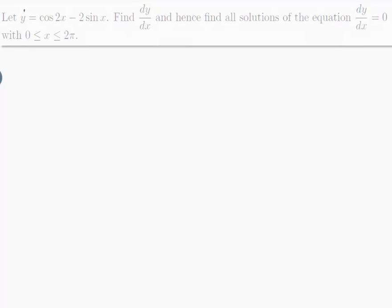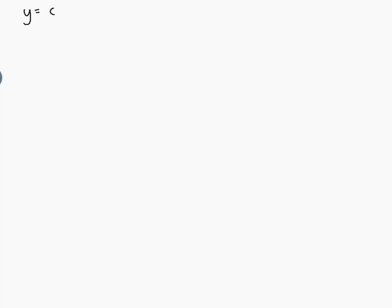So let's write it up: y is equal to cos(2x) minus 2sin(x).